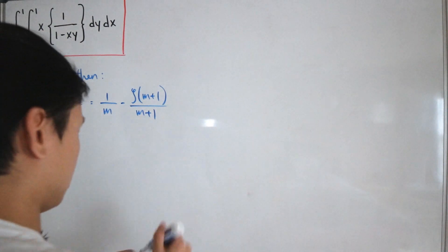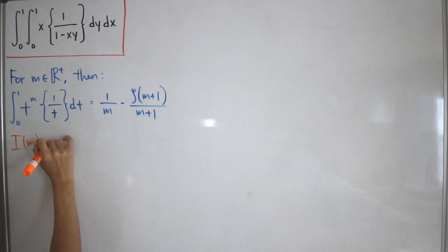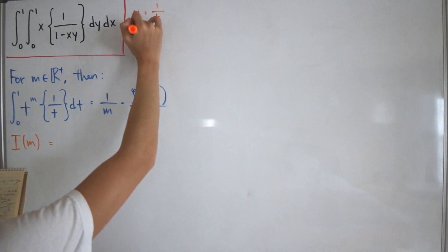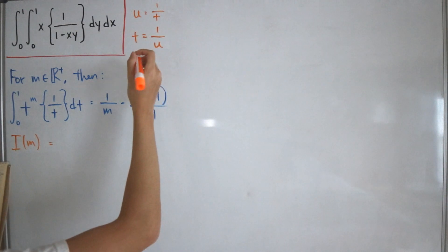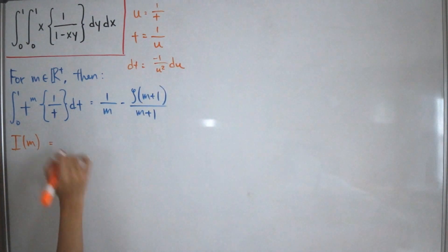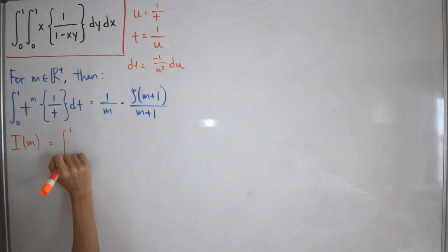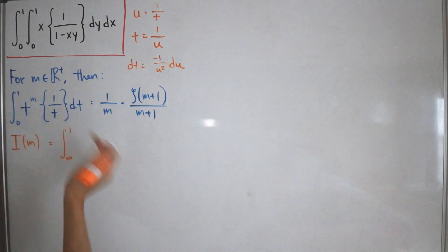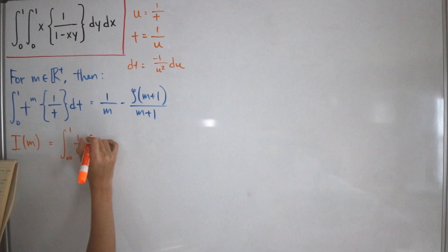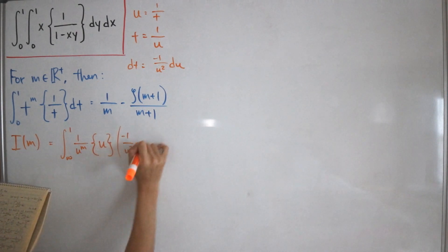Let's call this integral I(m). We'll perform a u-substitution: let u = 1/t, so t = 1/u. Differentiating both sides gives dt = -1/u² du. Plugging this back in and changing the bounds — when t = 1, u = 1; when t approaches 0, u approaches positive infinity — we get a new integral: 1/u^m times the fractional part of u times (-1/u²) du.